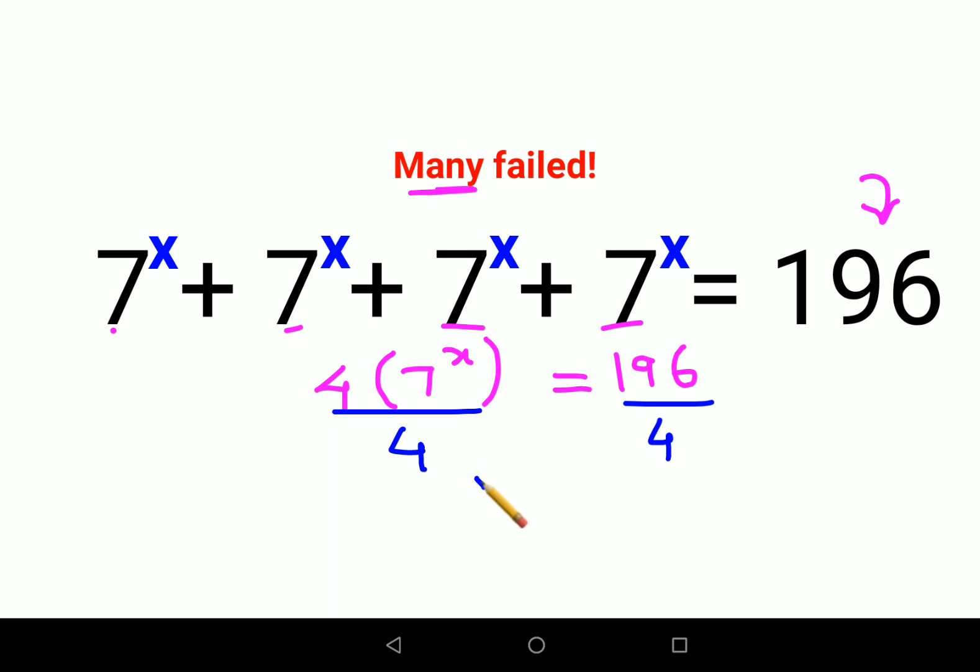Now please understand, in this case I can write 49 as nothing but what? See, 7^x can be written as... 49 can be written as 7^2. So from here itself we could say that x value is just 2.